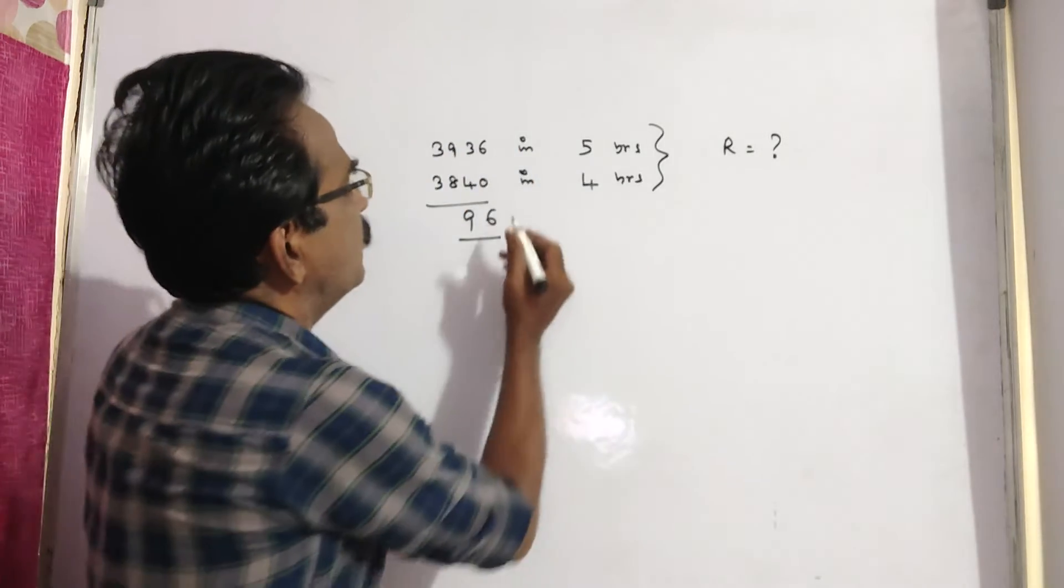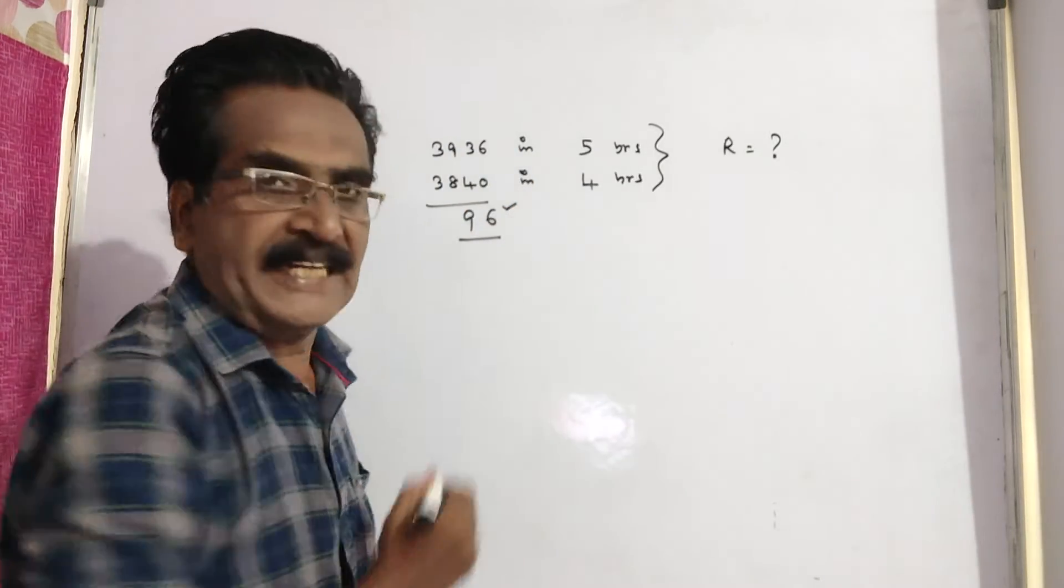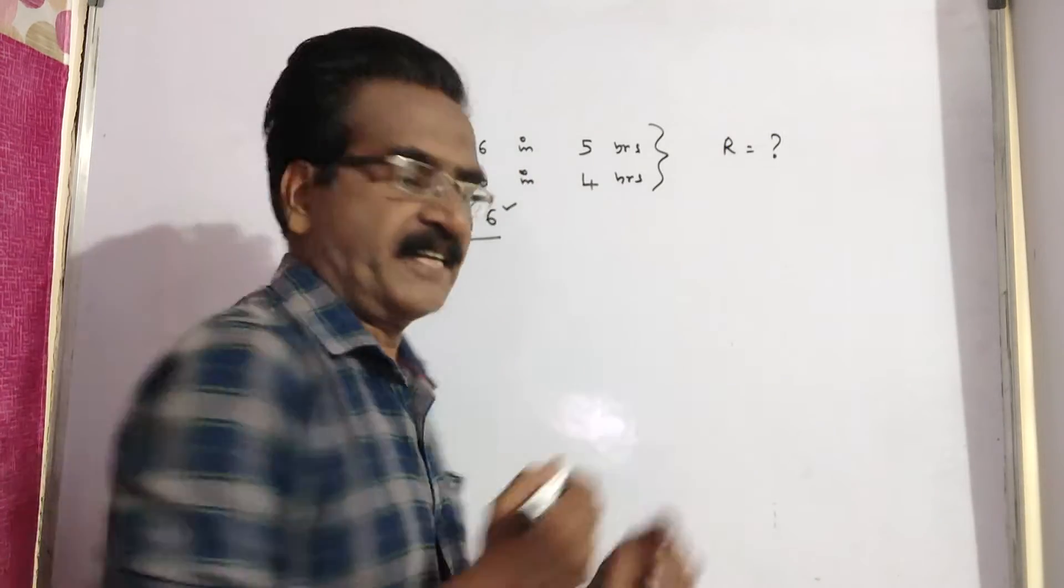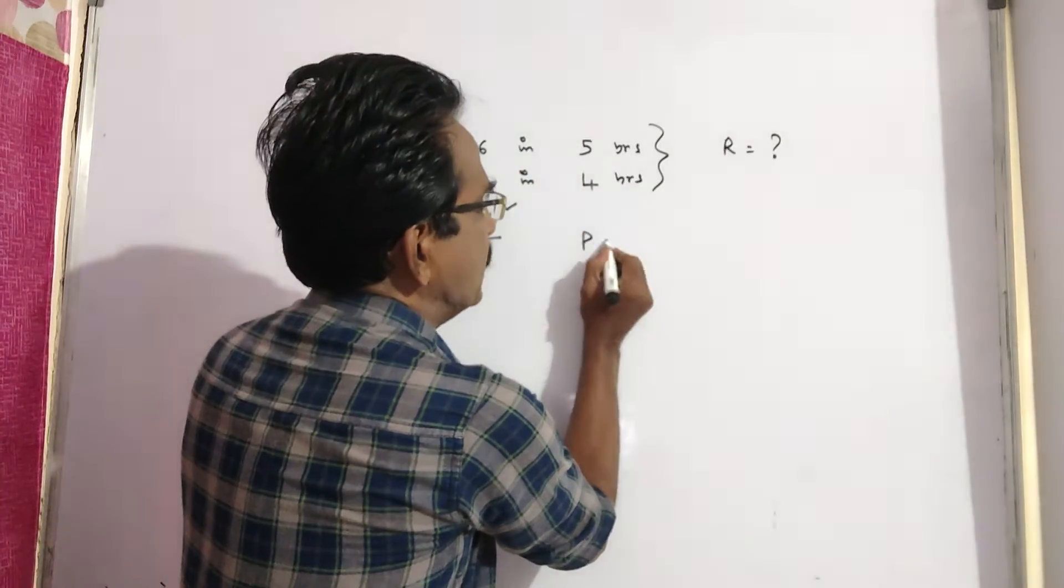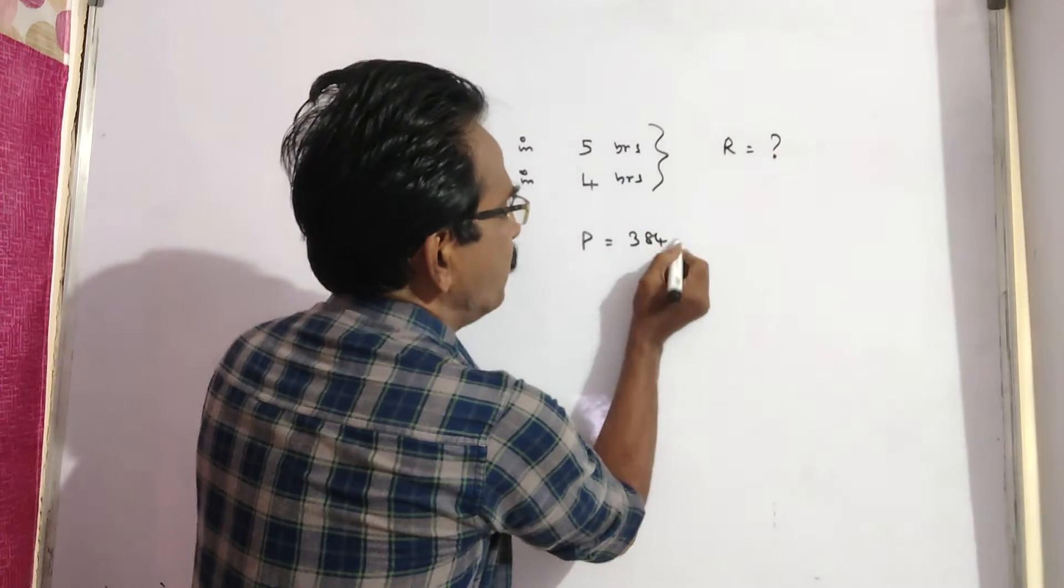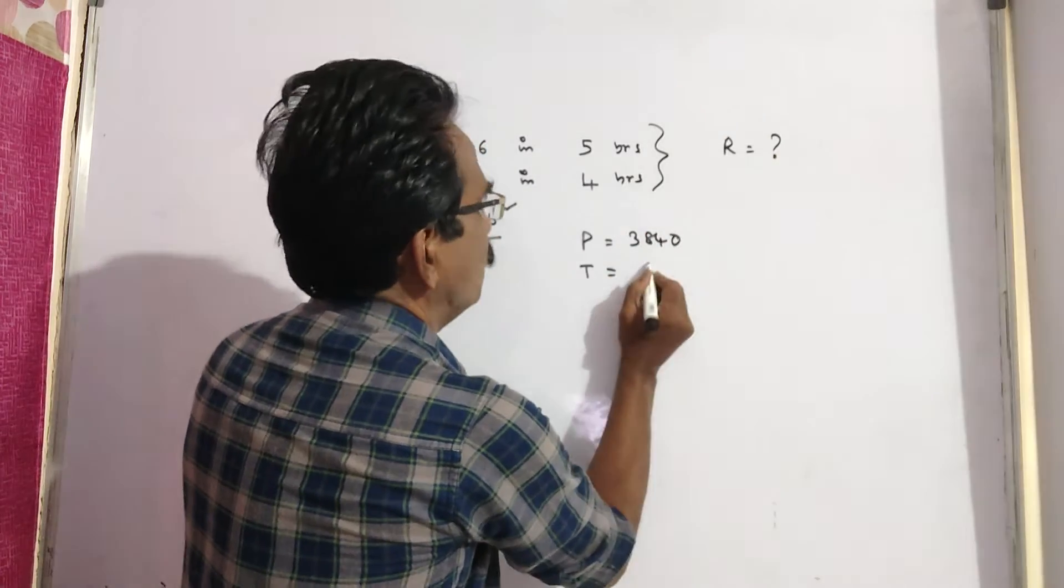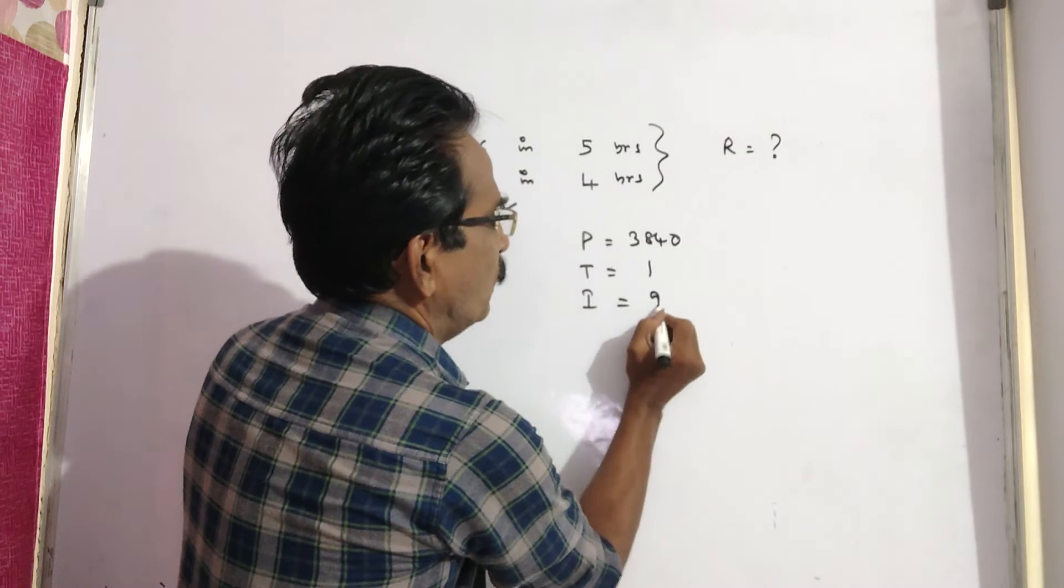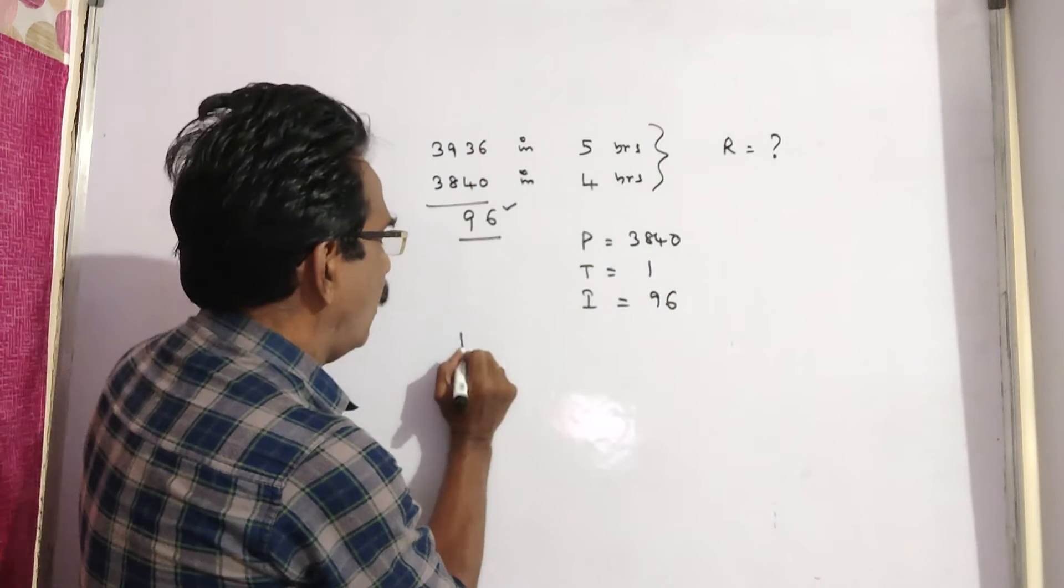That means we get an interest of rupees 96 on rupees 3840 in 1 year. That is, P equals 3840, T equals 1 year, and I equals 96. We can find R.